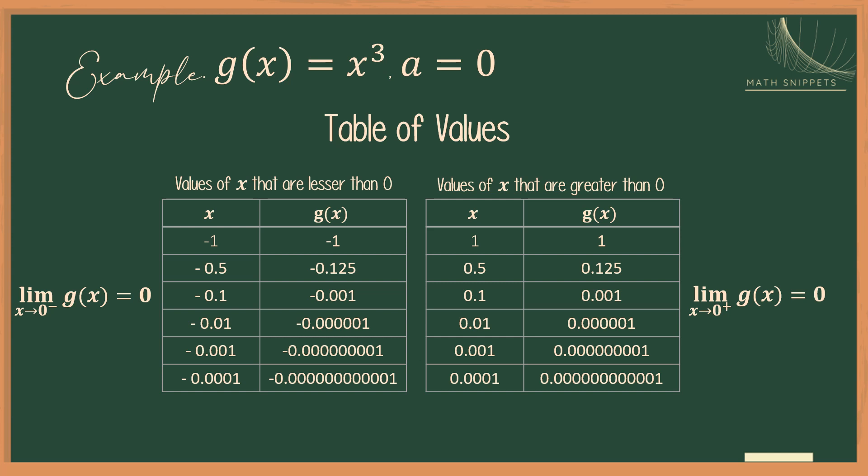So this is an example where function values, the left function value and the right-hand function values are opposite signs, but their limits are equal. So since the left-hand and the right-hand limits exist and are equal to 0, we say that the limit of the function as x approaches 0 is 0.